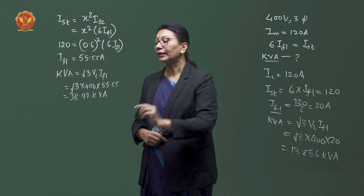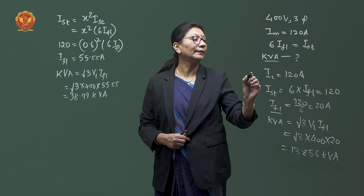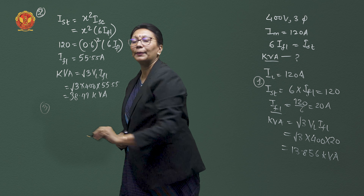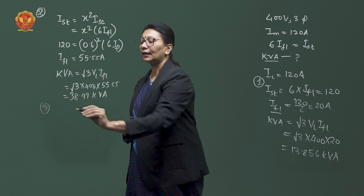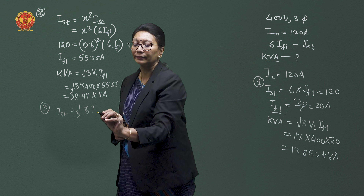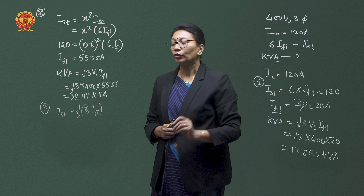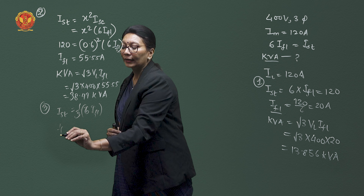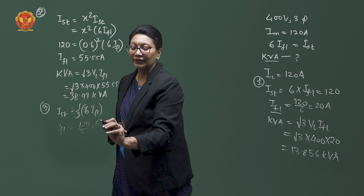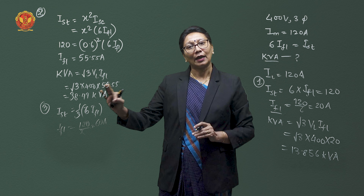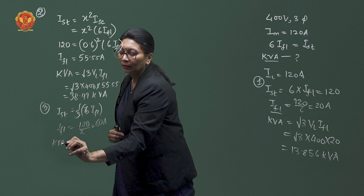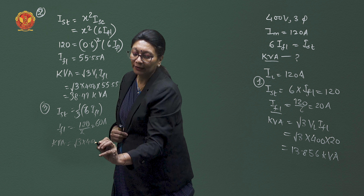The third case is star-delta starting. For star-delta starting, the starting current is 1/3 times 6 times full load current, which must not exceed 120A. So the full load current equals 120 divided by (6/3), which is 120 divided by 2, giving a full load current of 60A.